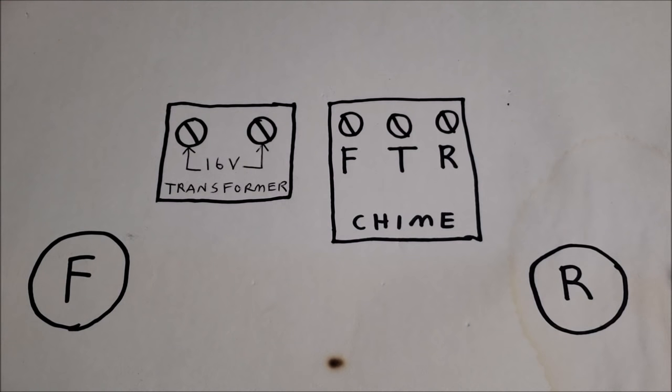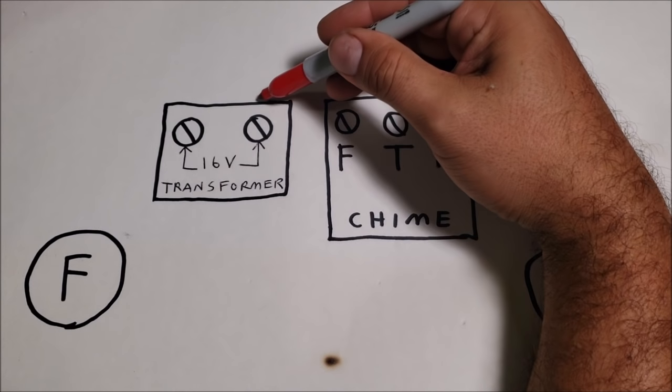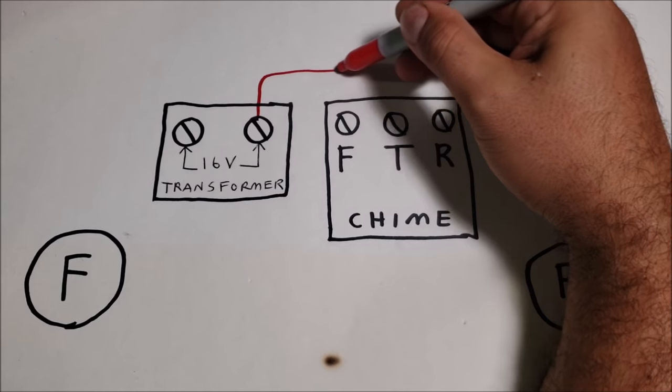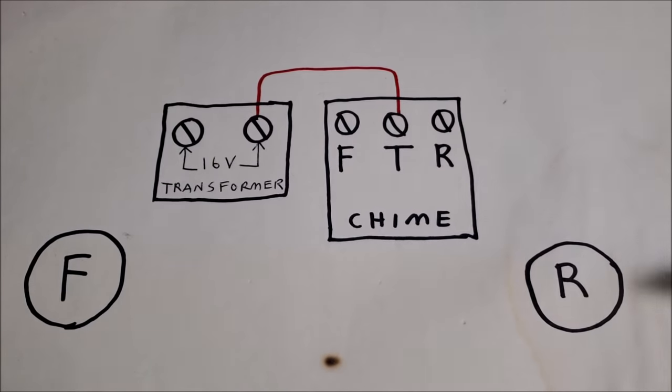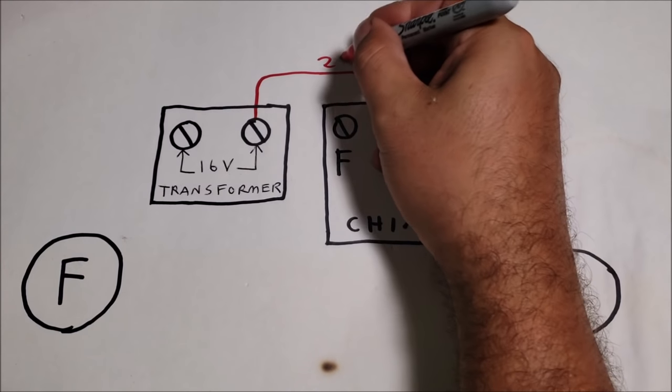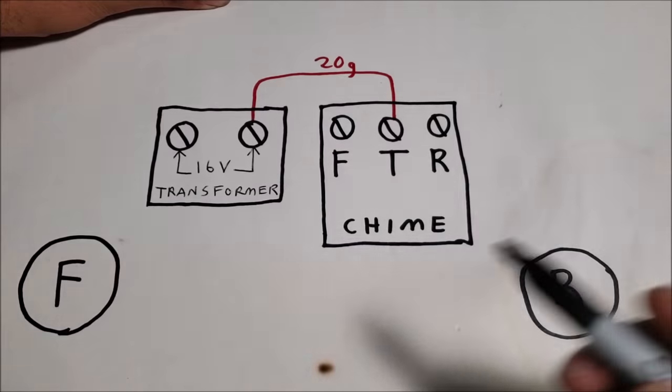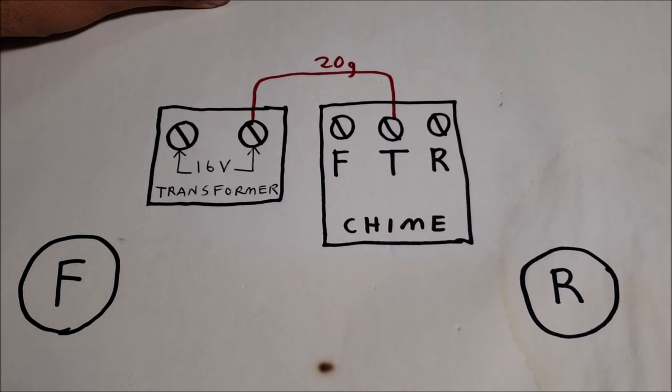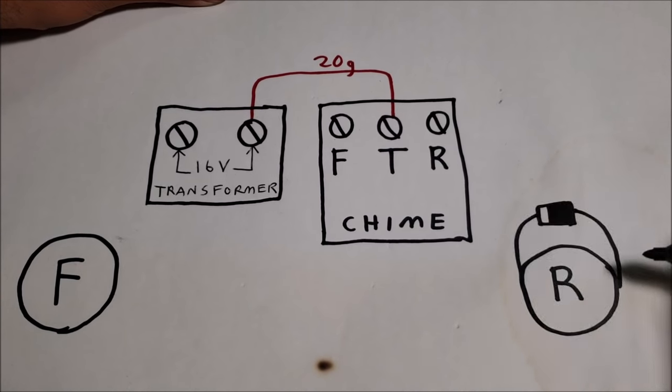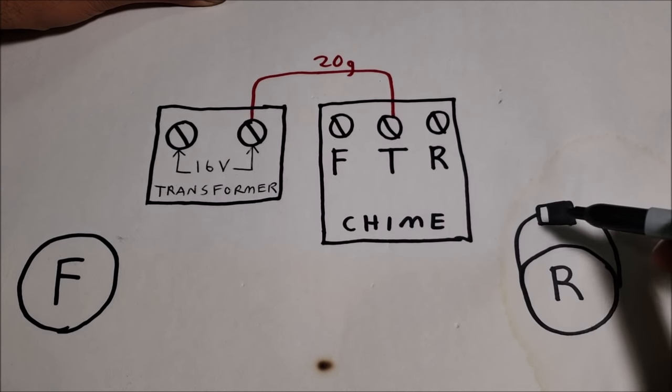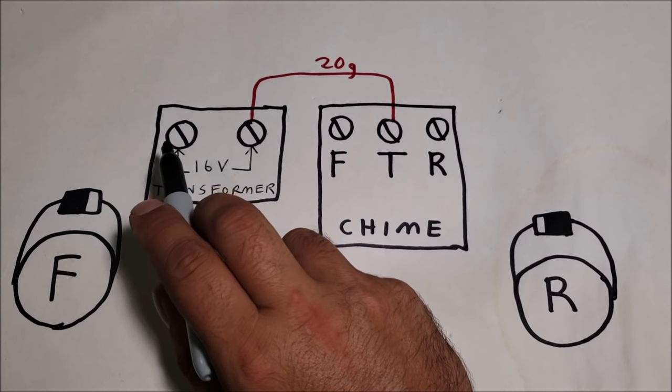So we're going to do a simplified wiring diagram in case you want to screenshot this. Okay, so on a transformer we're going to run one red wire over to the transformer T on the chime, and that's a red 20 gauge wire. Okay, so we got our front and our rear doorbell switches. Remember to put that diode in there. We got our diode installed. It does not matter which direction the silver is pointing.